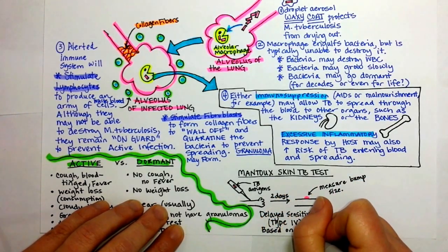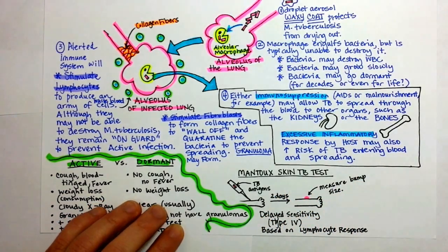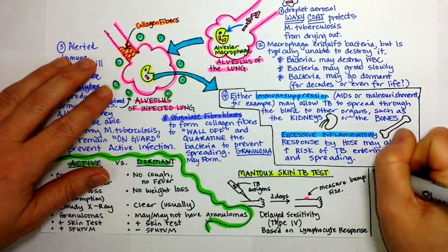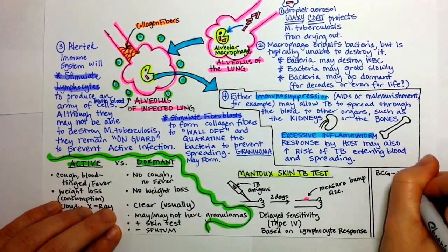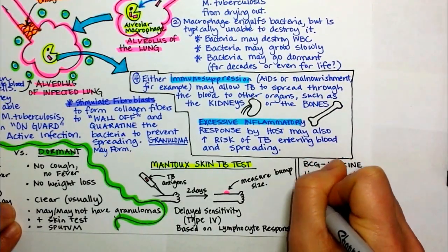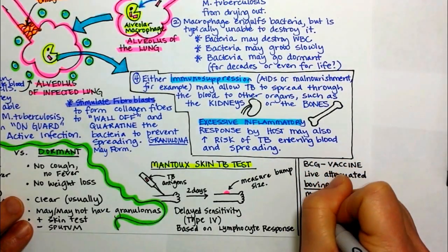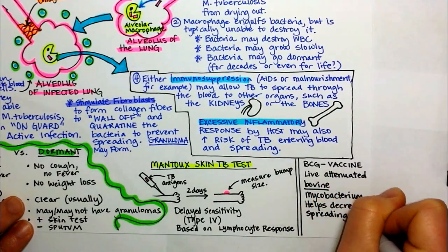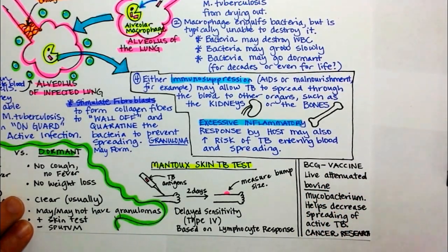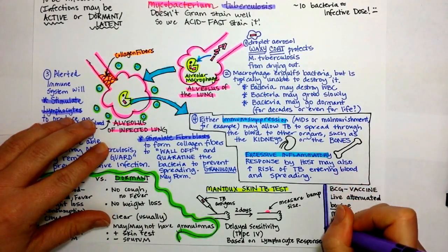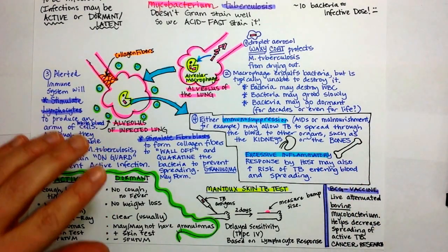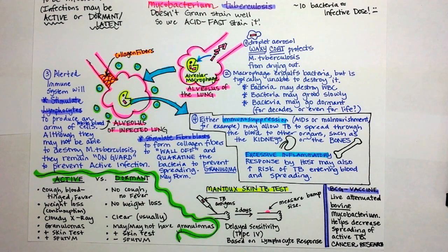Now let's talk about how the Mantoux skin test works. A small bit of mycobacterium antigens — little pieces from the bacteria — are injected into someone's arm. There is a delayed reaction over the next couple of days, and a red bump will rise. Measure the bump — if it's big enough, it's considered a positive test, so it is a little subjective. This is called a Type IV hypersensitivity test because it's lymphocytes that are responding, and it takes them a couple of days to multiply.